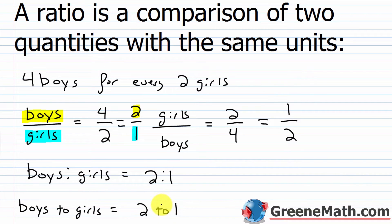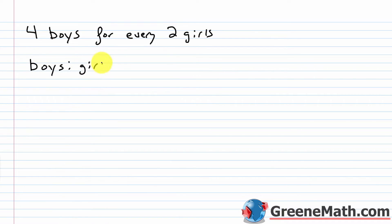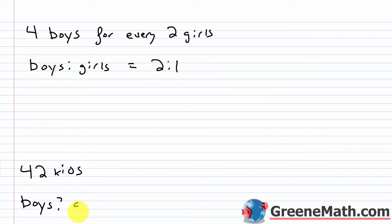Writing with the word 'to' is somewhat uncommon but you may still see it, so you need to recognize it as a ratio. A common test question would be: if there were 42 kids at the dance, how many were boys and how many were girls? So out of 42 kids, we want to find boys and girls.